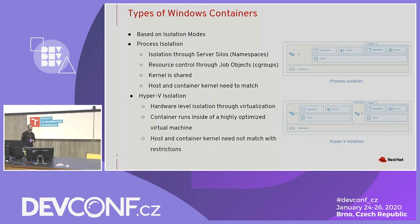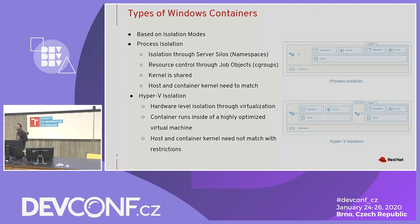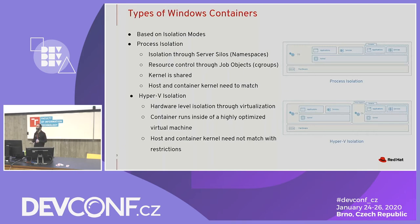With Hyper-V isolation, your host kernel and container kernel don't need to match because you have a VM. However, there are still some restrictions: if you have a container built for Server 2019, you can't run it on a Windows Server 2016 host. Microsoft says no to that, so that's a restriction folks will have to live with.